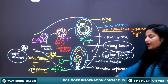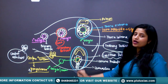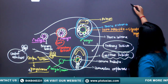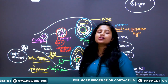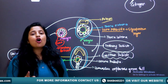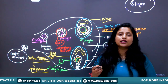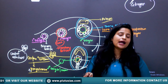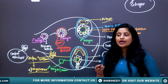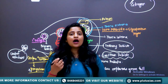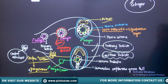The mature follicle also releases the hormone estrogen. Estrogen is responsible for the development of secondary sexual characters, such as development of mammary glands (thelarche), pubic and axillary hair, and the high-pitched voice in females.